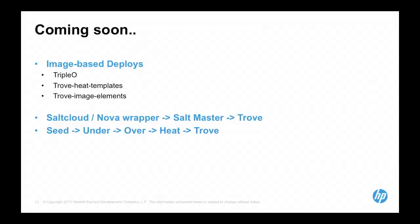We continue to use Salt today, but the next thing we're working on is image-based deployments using Triple O tooling. We'll provide the Heat templates required to stand up our control plane, as well as all the images that make up our control plane. We're going from a world where we use salt cloud or a Nova wrapper script to boot a salt master and provision the control plane, to a world where we use Triple O — seed cloud, under cloud, over cloud — and use Heat with OS collect config and OS apply config to put configuration data onto those VMs.